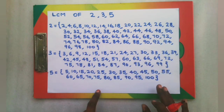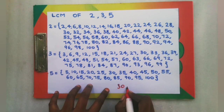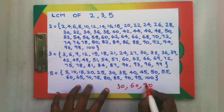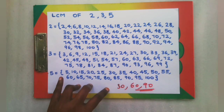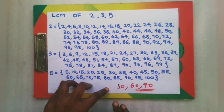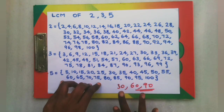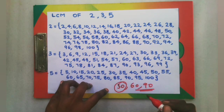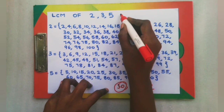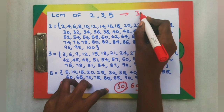The grid shows common numbers which are 30, 60, and 90. But the LCM is the smallest number which is the common multiple of 2 or more given numbers — the least common multiple. So the smallest number is 30, and therefore the LCM of 2, 3, and 5 is 30.